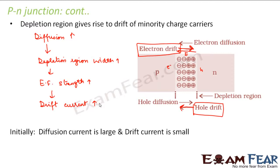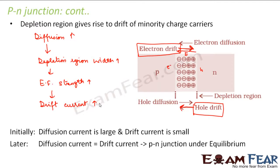Initially, diffusion current is large and drift current is small. That's because initially there is no depletion region — as soon as you join p-type and n-type, the depletion region gradually forms as diffusion takes place. So initially your drift current is very small because there is no depletion region, but diffusion current is large. Later, as diffusion continues, the drift current keeps increasing until it reaches a stage when drift current becomes equal to diffusion current, and at this stage the P-N junction is under equilibrium.